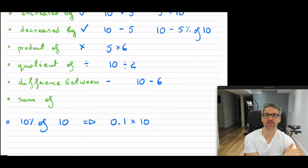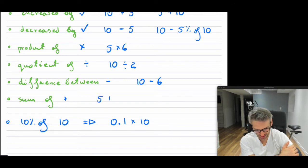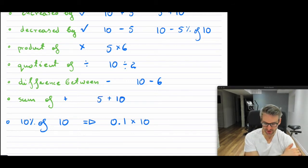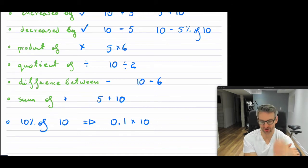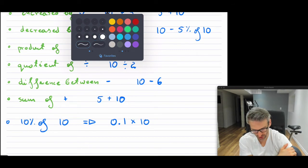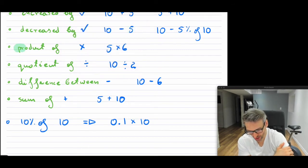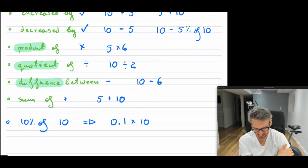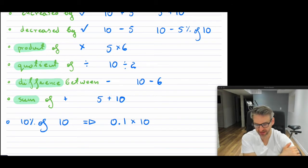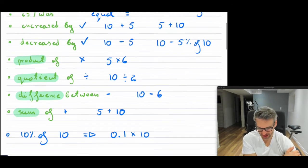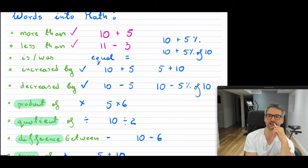"Sum" is easier because we run into sum a lot. So when you say "sum of 5 and 10," that's nothing else but addition: 5 plus 10. So these are words in math that we utilize. Product means multiply, quotient means division, difference means subtraction, sum means addition. But then you have words like "more than" and "less than," or "increased by" or "decreased by," and those ones you have to be careful with.